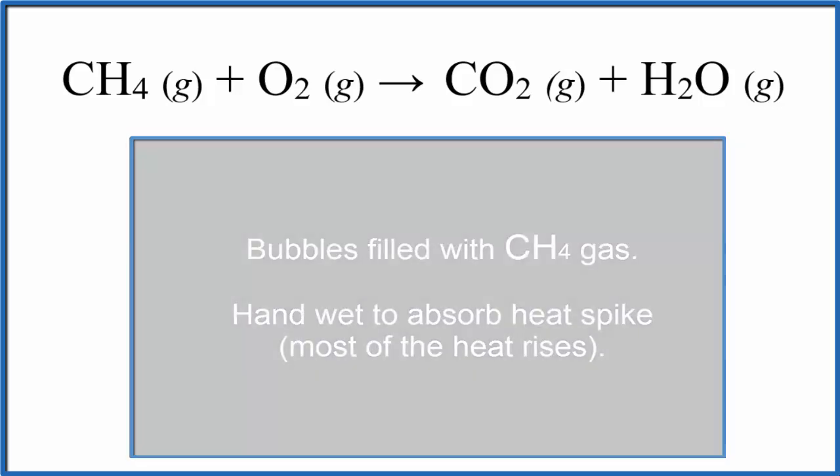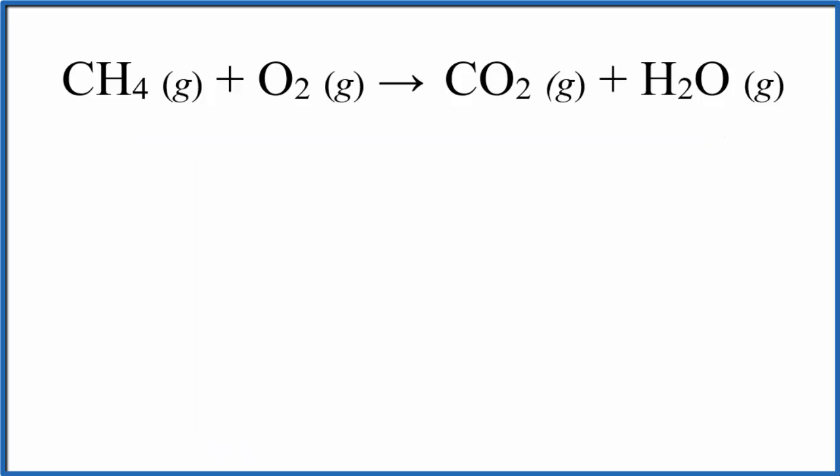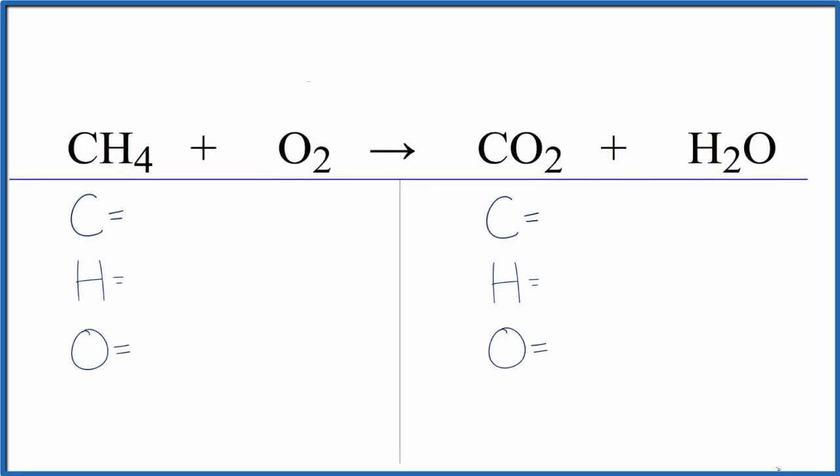Let's try to balance this equation for the combustion of methane. To balance the equation where we're burning the methane in oxygen, let's count the atoms up on each side. We have one carbon, four hydrogens, and two oxygens.